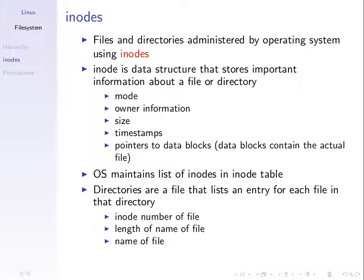The mode is really the access rights — what particular users or classes of users can do with this file. The inode data structure stores this information about the file, and then has pointers to data blocks which contain the actual file or blocks of the file. Depending upon the size of the file, it may be split across multiple blocks on the hard disk. The inode has pointers to those blocks so when someone wants to read the file, they can find all the blocks.